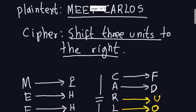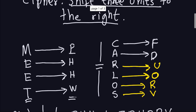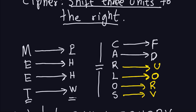I almost finished that example from last time. If you recall what we did in the previous video, I transformed every letter of the word 'meet' into the corresponding letters. So M was transformed to P, E to H, and so on. I also did part of the word 'Carlos': C was transformed into F, A into D. The ones shown in yellow are the ones I didn't do last time.